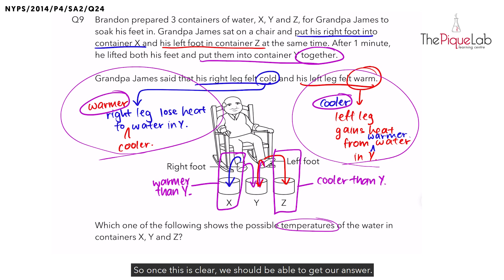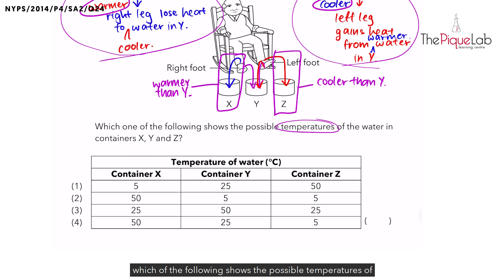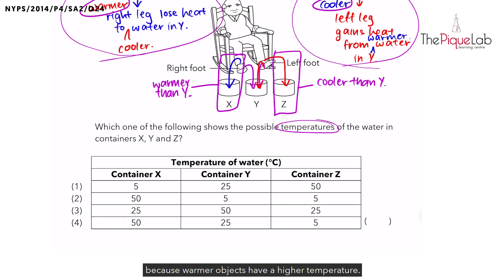So once this is clear, we should be able to get our answer. Now the question asks, which of the following shows the possible temperatures of water in all three containers? And we know that X should be warmer than Y, Z should be cooler than Y. In that case, when we say X is warmer than Y, it means that it will be at a higher temperature than Y because warmer objects have a higher temperature. So what should I see? I should be looking for a bigger number. A larger temperature means a bigger number than Y.